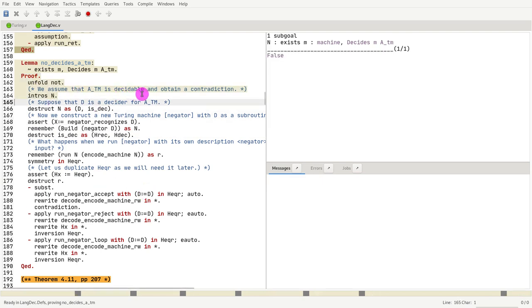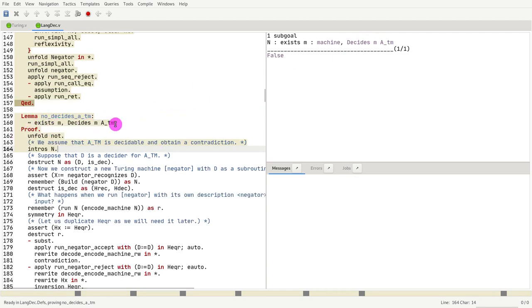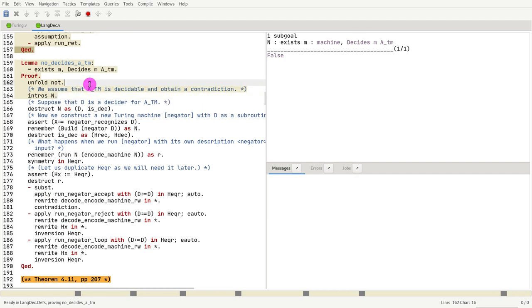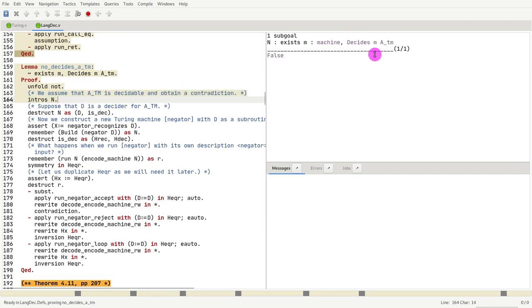So we assume that ATM is decidable. So I actually document the proofs. And I try to follow what is in the book. So you can both read the book and also go through, step through the proofs here, and you will have a complimentary material. So we're going to assume that the machine. So what we're proving is there is no machine that decides ATM. So we're going to prove that by contradiction, which is doing intros. So now we have the assumption that there is a machine that decides ATM. We're going to destruct that. And now what we're going to do. So D is the machine that decides. And the isDec is saying that D decides ATM.